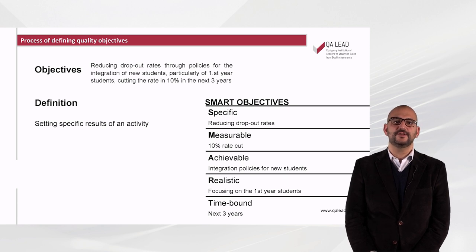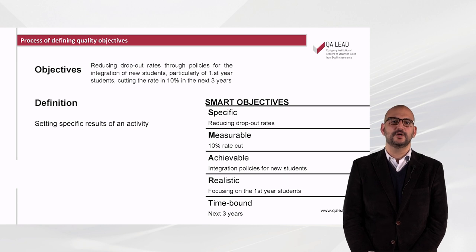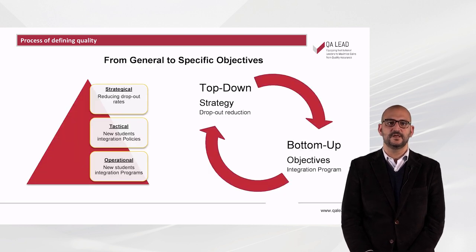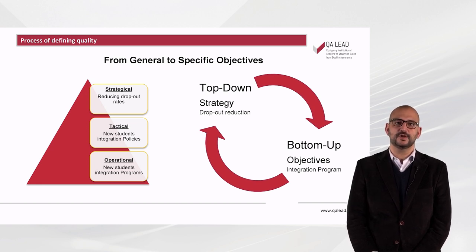That being said, a good example of a SMART objective could be: reducing dropout rates through policies for the integration of new students, particularly first-year students, cutting the rate by 10% in the next three years. It is equally important to break down the objectives at different operating levels in an effort to allow the clarification of responsibilities.